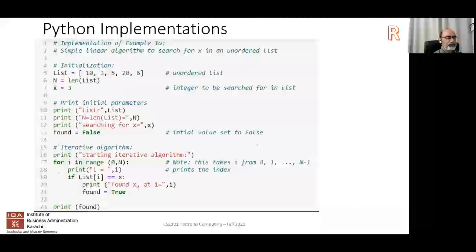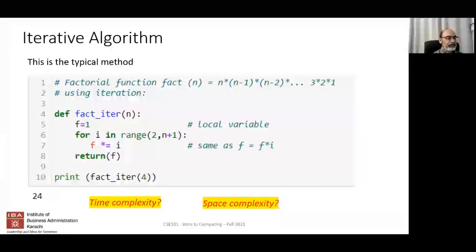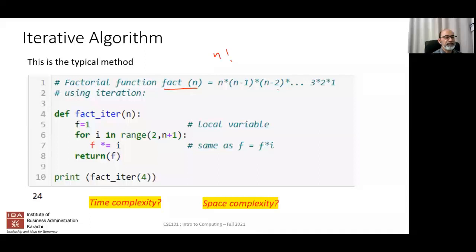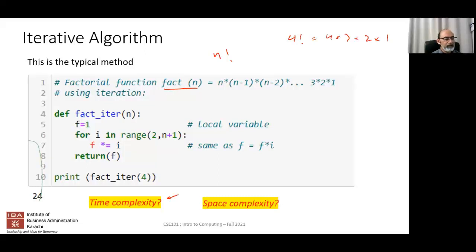Looking at this iterative algorithm, which is an implementation of the factorial function - factorial of n is defined as n times n minus 1 times n minus 2, all the way down to 1. For example, 4 factorial is 4 times 3 times 2 times 1. The question is: what is the time complexity of this? A student answers: it is O(n).